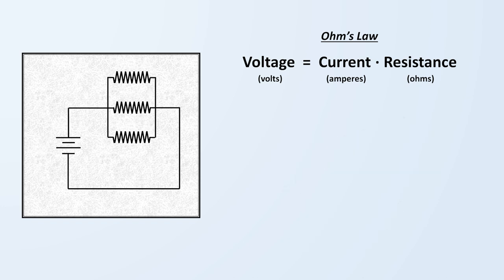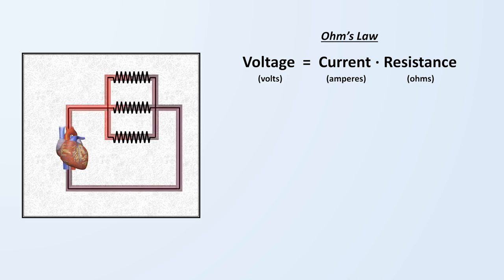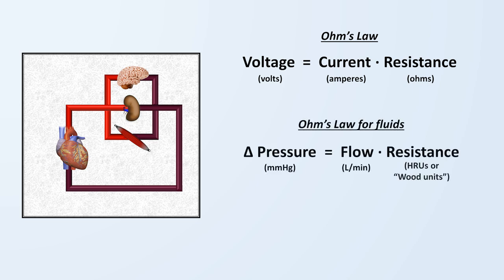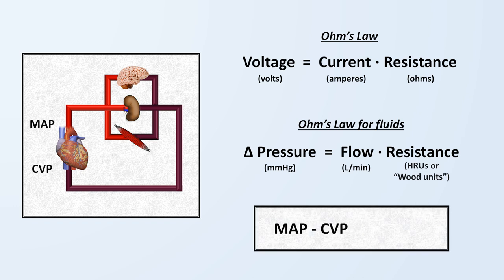To continue the comparison with fluids, we can replace our battery with a fluid pump or the heart, the wires become tubes or blood vessels, and the parallel resistors become the vascular beds to individual organs. Our Ohm's law for fluids then becomes the change in pressure equals the flow times resistance. And substituting in values from physiology, we have the mean arterial pressure minus the central venous pressure equals the cardiac output times the systemic vascular resistance, the last of which is sometimes called either the total vascular resistance or total peripheral resistance. This is, in my opinion, the most important equation in cardiovascular physiology, and in particular, in the bedside practice of cardiovascular medicine.